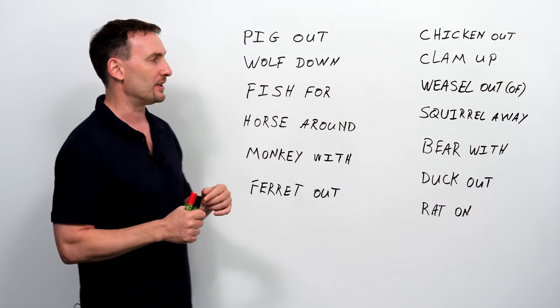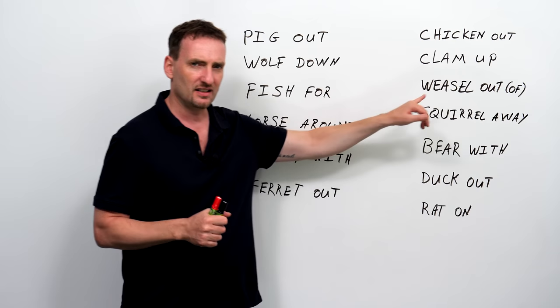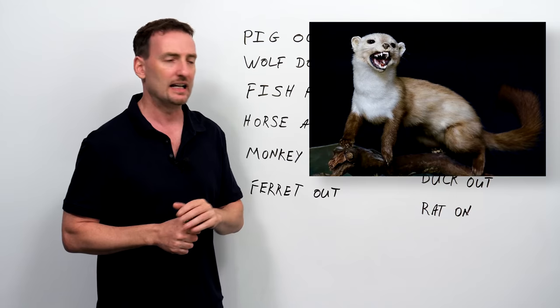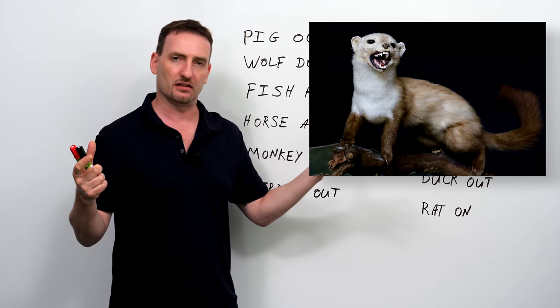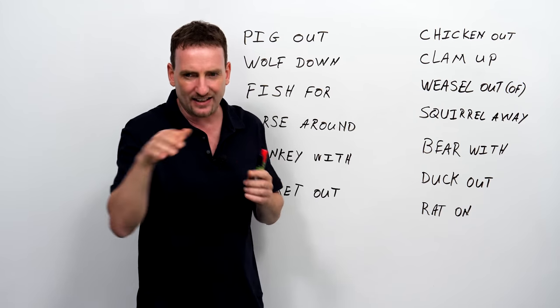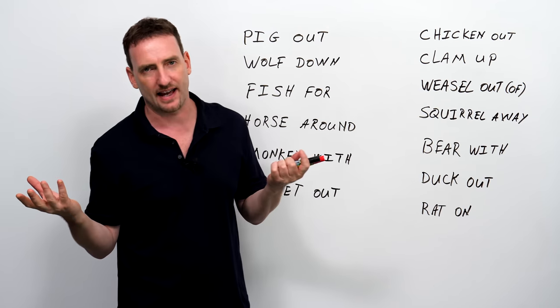Weasel out of. A weasel is very similar to a ferret. Again, you can do a search for what a weasel looks like. A weasel is a little bit bigger than a ferret. A weasel can basically get into every little space. It's a wild animal.